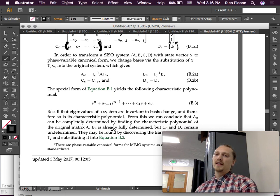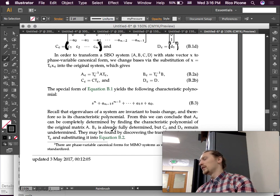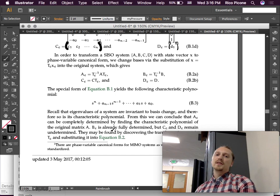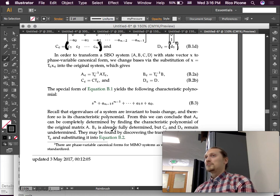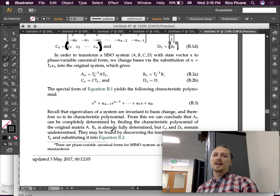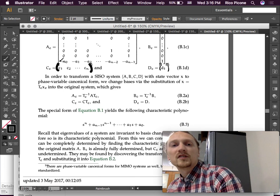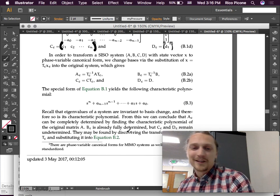So, the reason that we do this is that this yields this exact polynomial, which depends all on these A's, okay? Recall that eigenvalues of the system are invariant to basis change. That's an important fact, something that we need to keep in mind always. And, therefore, so is its characteristic polynomial.